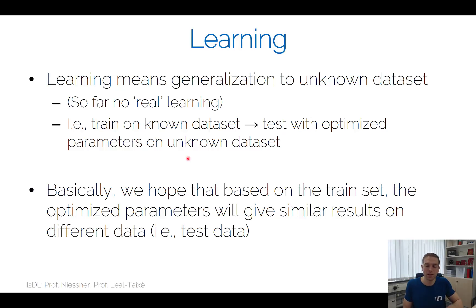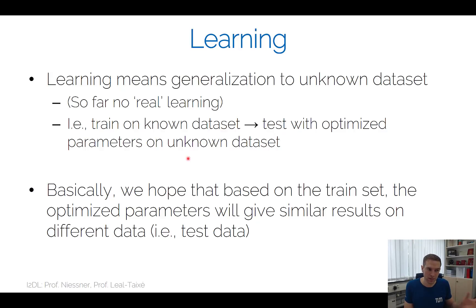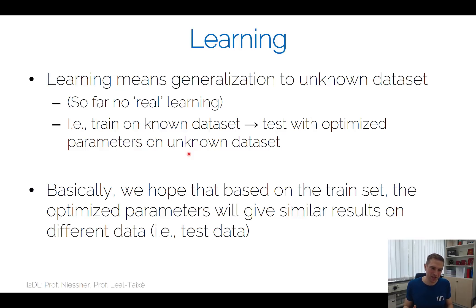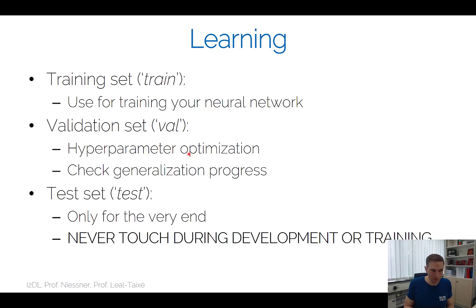The hope during learning is that by optimizing the network on the training set, we'll get similar performance on unseen data. When evaluating, make sure you don't accidentally evaluate on your training set. There will naturally be some generalization gap — we won't perfectly match training performance on validation data.